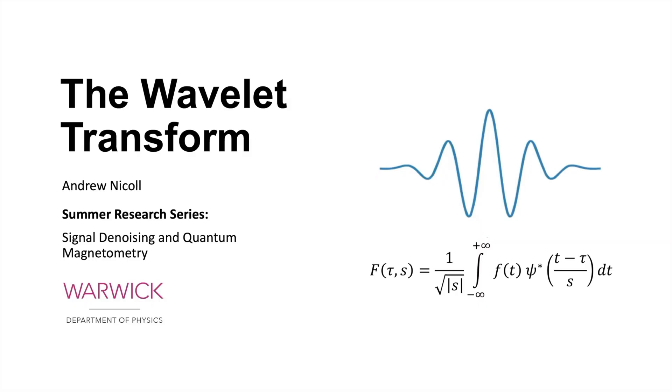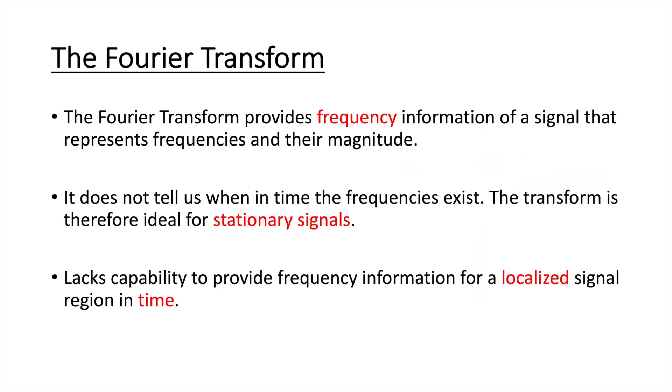But first, I'll cover some more basic knowledge before we talk about Wavelets. So we'll start with the Fourier Transform. As you may know, the Fourier Transform provides frequency information of a signal that represents its frequencies and their magnitude. It does not tell us when in time these frequency components exist, so the transform is ideal for stationary signals.